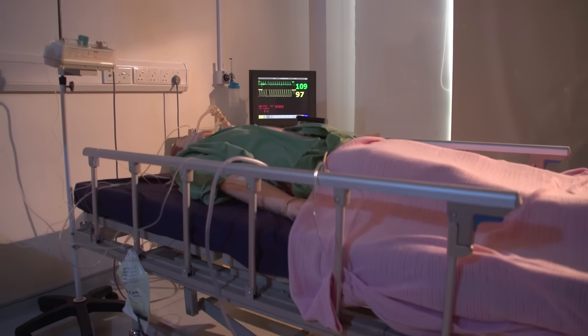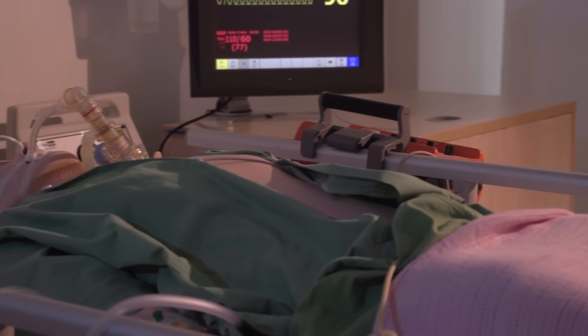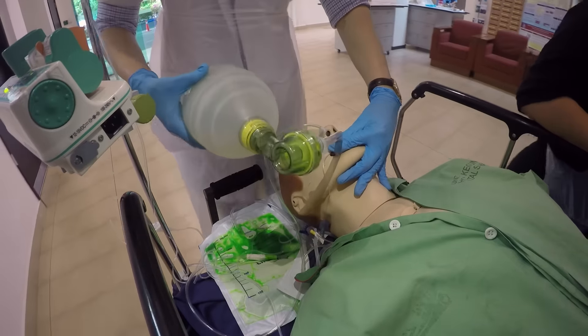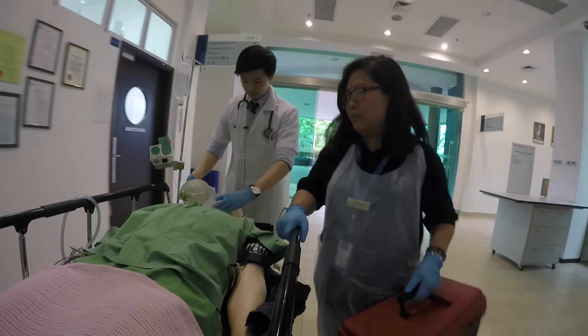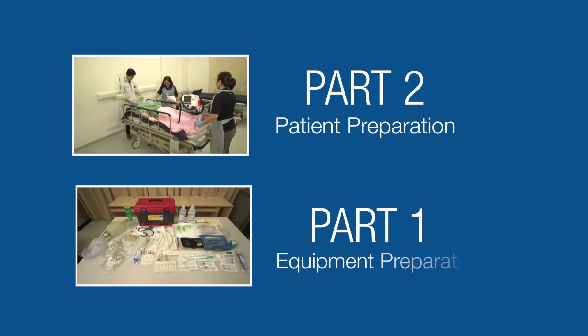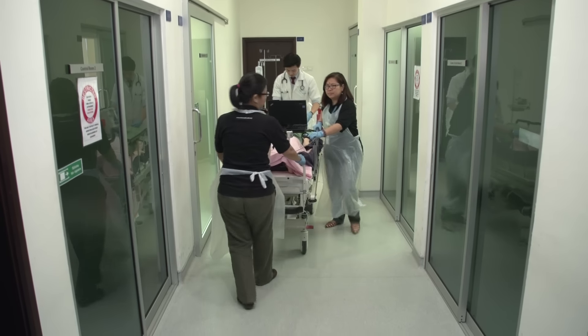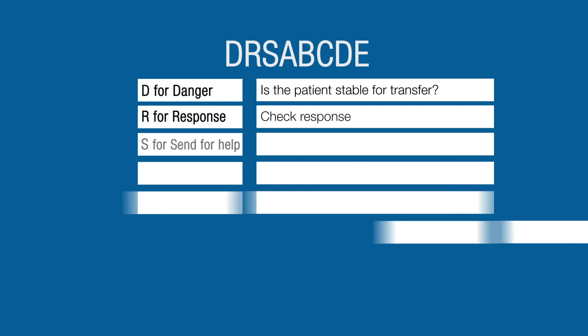This video will share tips on safe transport of adult critically ill patients and is designed for junior doctors who are required to perform this task due to resource constraints. A critically ill patient is a patient at risk of life-threatening events. This includes patients who are on various life support but also patients who appear stable but are at risk of sudden deterioration. This video is part 2 and will show steps for patient preparation. Please also view part 1 which is on equipment preparation. The steps for both equipment and patient preparation can be easily recalled following the acronym DOCTORS ABCDE, commonly used by various algorithms.